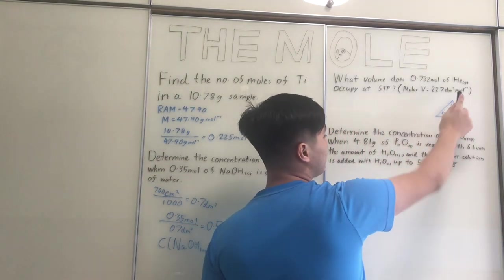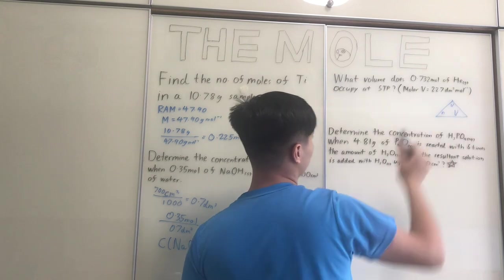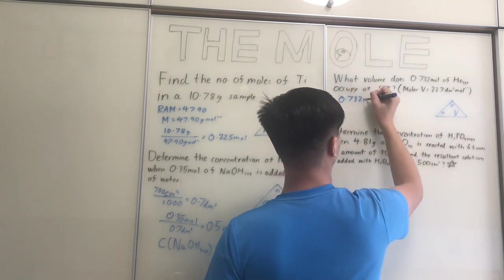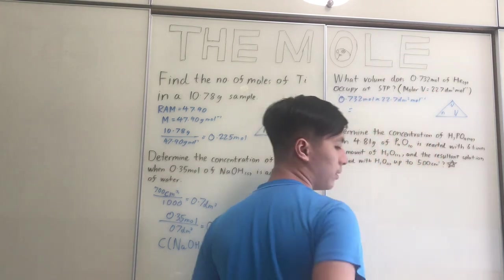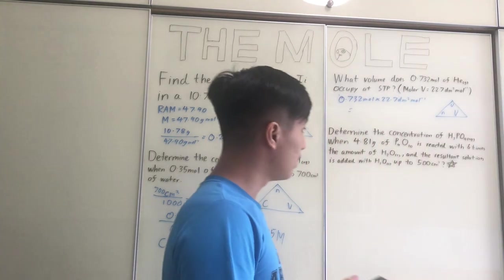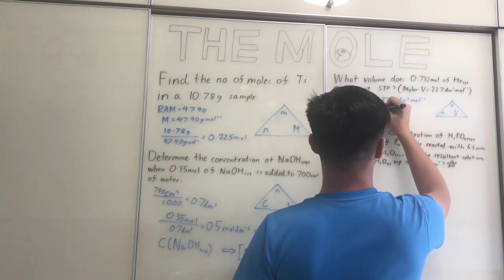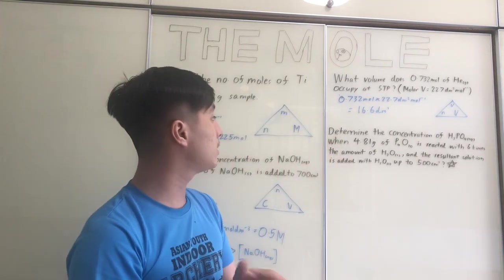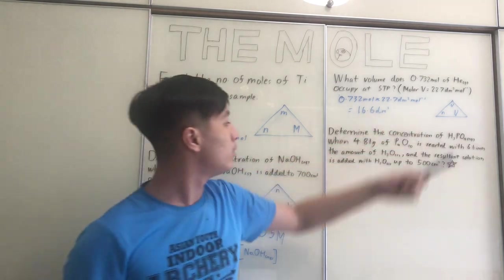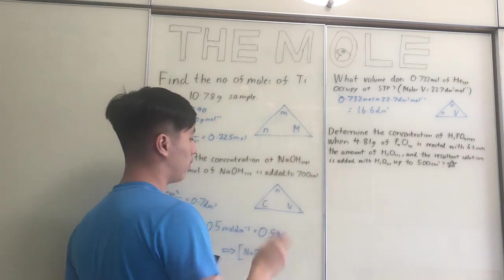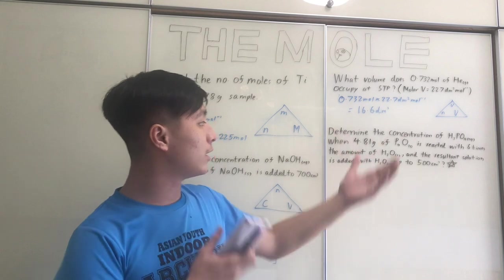You don't need to memorize 22.7 dm³ mol⁻¹ right now — it's in the data booklet — but I'd advise doing lots of questions so you get familiar with the value without needing to flip through the booklet during the exam. Since molar volume is the same for every gas, and we know N = 0.732 moles and large V = 22.7 dm³ mol⁻¹, the volume = 0.732 × 22.7 = 16.6 dm³.